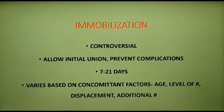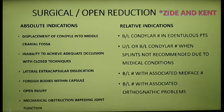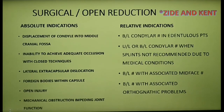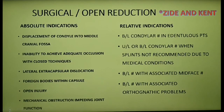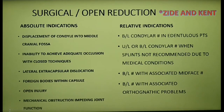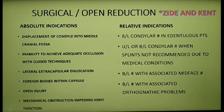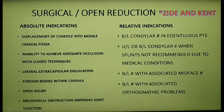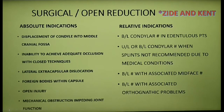The second approach is surgical or open reduction. Zide and Kent proposed absolute and relative indications for open reduction of the fractured mandibular condyle. Absolute indications include: displacement of the condyle into the middle cranial fossa; impossibility of obtaining adequate occlusion by closed techniques; lateral extracapsular dislocation of the condyle; any foreign bodies within the TMJ capsule; mechanical obstruction impeding TMJ function; and open injuries such as penetration, laceration, or avulsion to the TMJ.